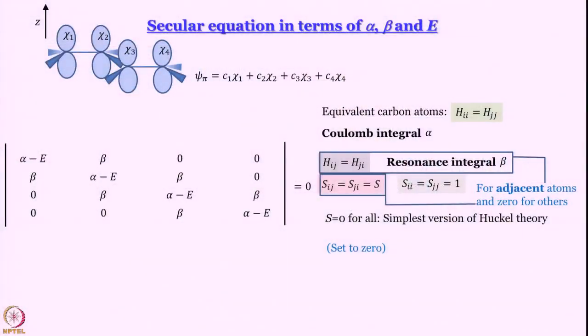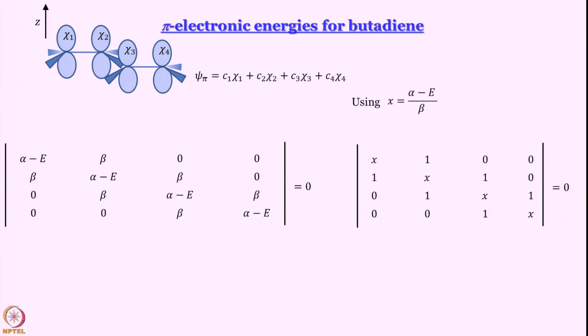Now, we will simplify this a little further before going ahead. How can I simplify? What happens if I divide alpha minus E divided by beta? If I take some quantity x where x is alpha minus E divided by beta (not B, I keep on saying B for beta inadvertently, please do not get confused when I say B in this context I actually mean beta). So alpha minus E divided by beta I put it as x and now we have a nice determinant here: x, 1, 0, 0; 1, x, 1, 0; 0, 1, x, 1; 0, 0, 1, x. That determinant equal to 0.